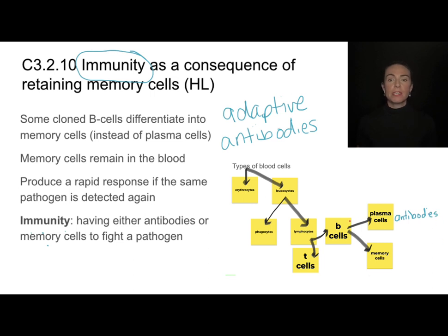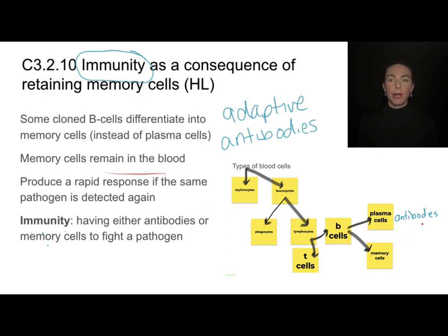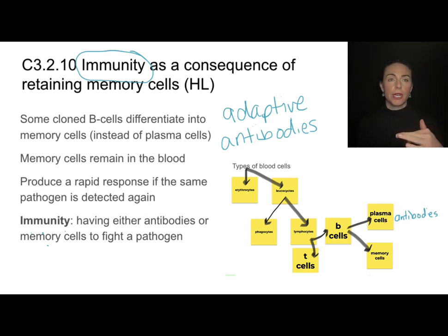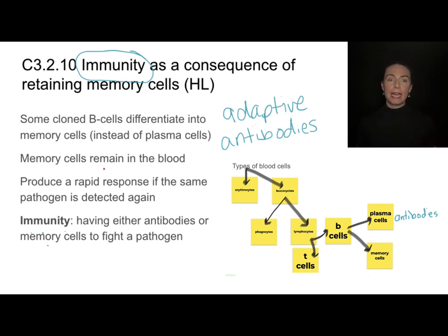However, some of these B cells differentiate into memory cells. Memory cells are different from antibodies in the fact that they remain in the blood. Antibodies in general are going to decrease in their concentration when that pathogen has been eliminated from the body. Memory cells, however, remain in the blood for long periods of time, and their purpose is to produce a rapid response if the pathogen is ever detected again.